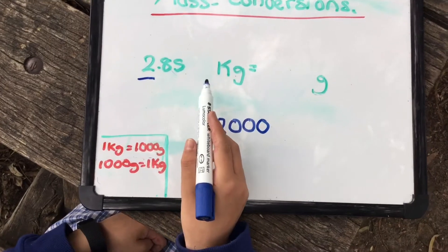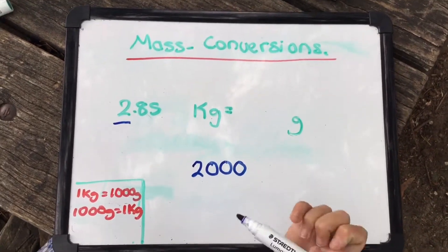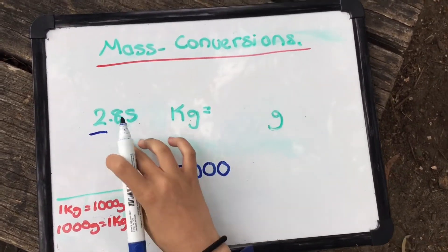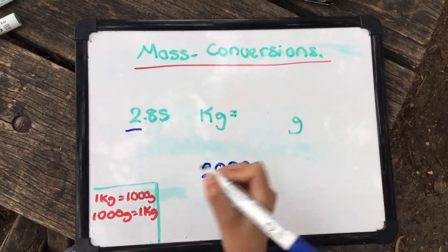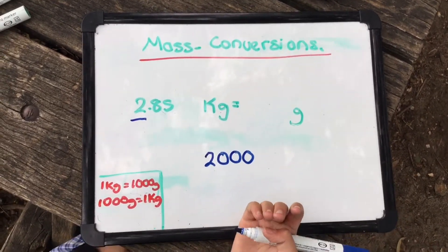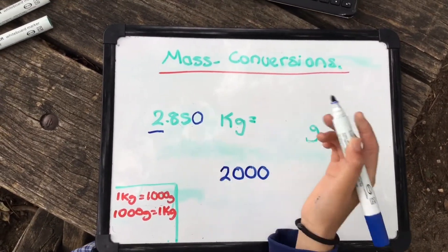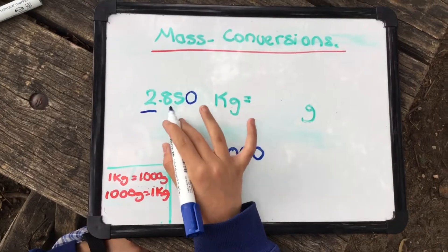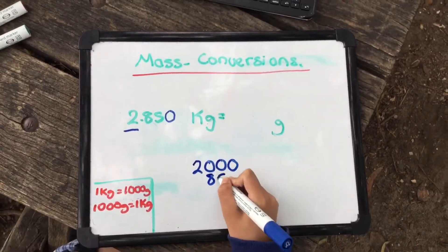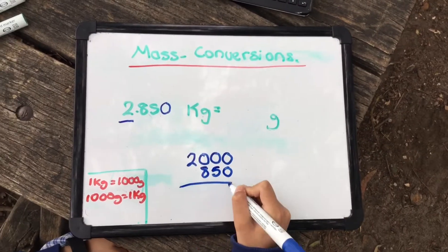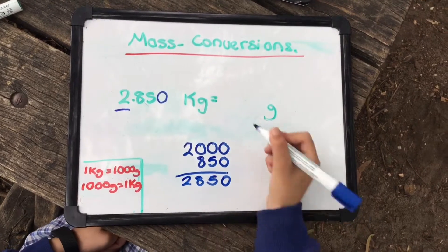And then we have 0.85 kilograms. Now how do we work that out? Well, first we have to make sure our number has 3 decimal places, because 1000 grams has 3 zeros. So what we have to do is if there's none, we just have to add a 0 at the end. And then you have 850 grams, and then you just add them together. So you have 2,850 grams.